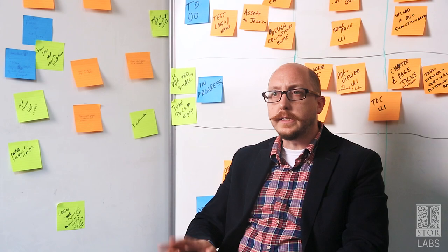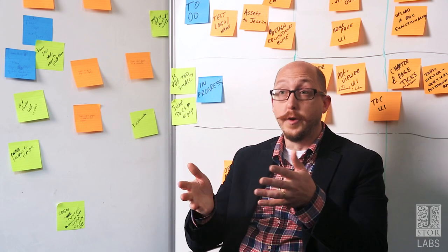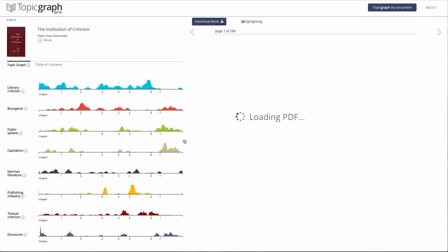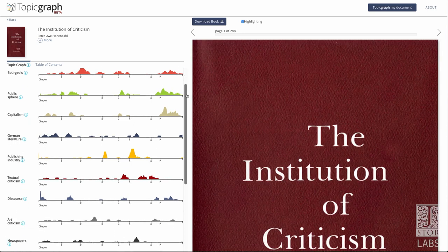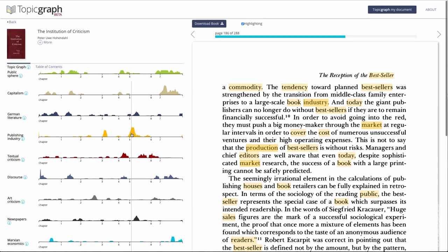The outcome of this project, Reimagining the Monograph, is first and foremost the prototype, Topic Graph, which is a website that allows users and researchers to see and visualize all of the topics contained within long-form scholarly argument.